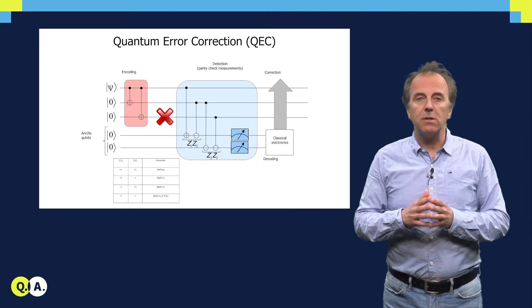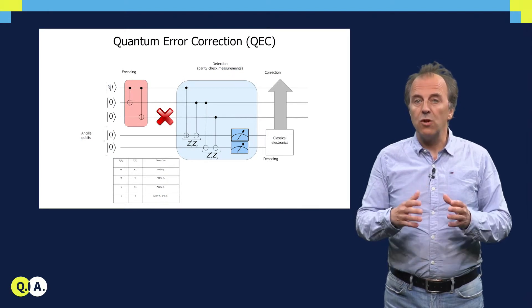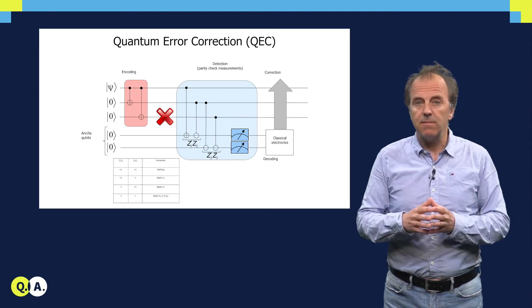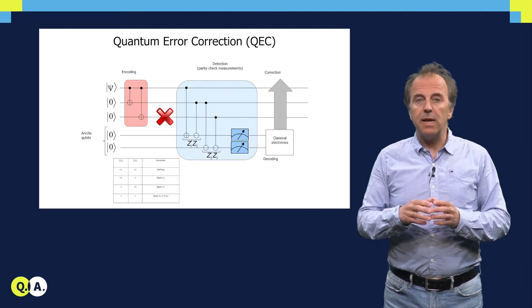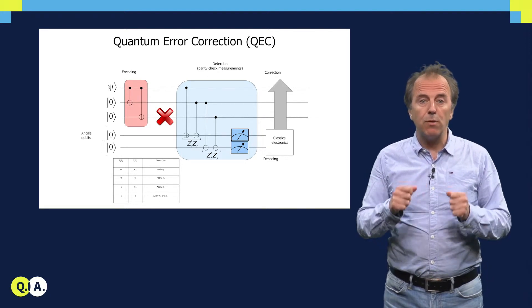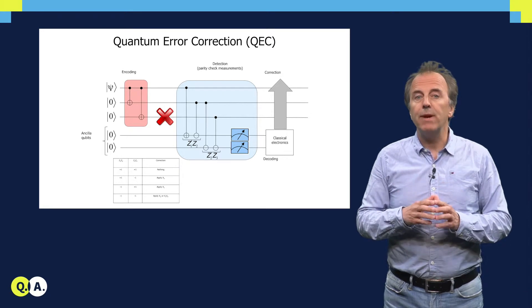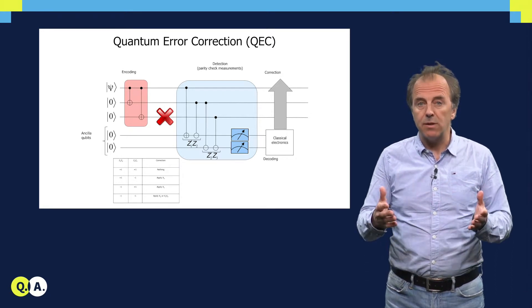Closely related to this measurement operation is quantum error correction and detection. We need to keep in mind that qubits are fragile and error prone, and due to their very limited coherence time, they are exposed to errors.